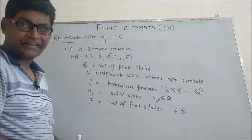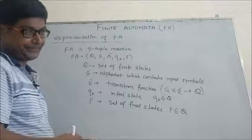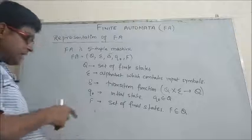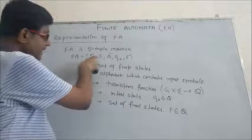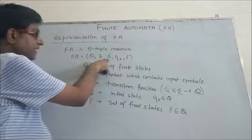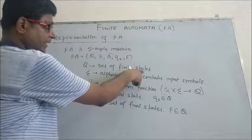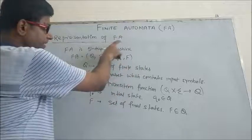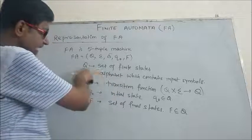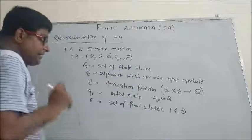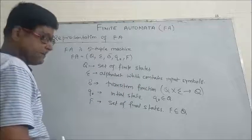Now let's discuss the representation of finite automata. Finite automata is a five-tuple machine. The five tuples are represented as: FA = (Q, Σ, δ, q₀, F), where capital Q is the set of finite states. We have a finite number of states — that is why it is called a finite state machine. Sigma (Σ) represents the alphabet, which contains the input symbols.